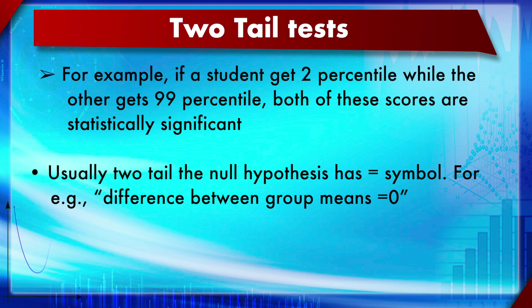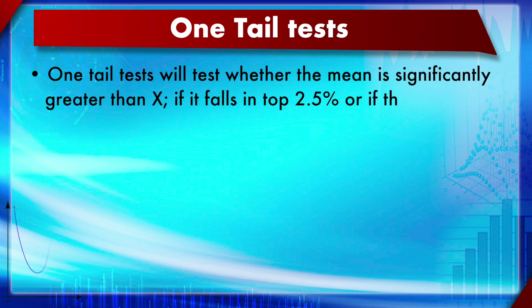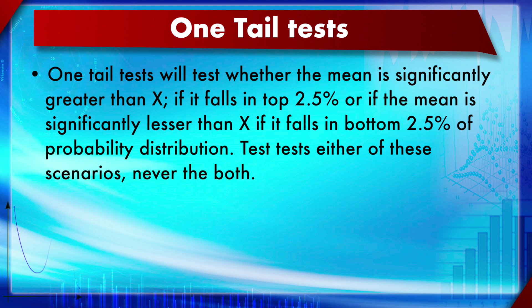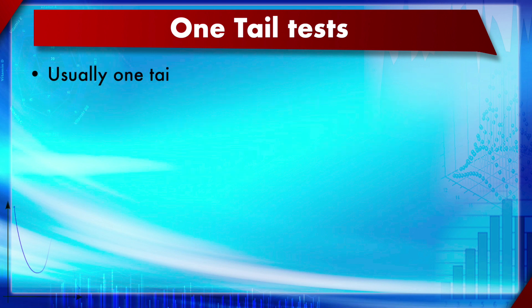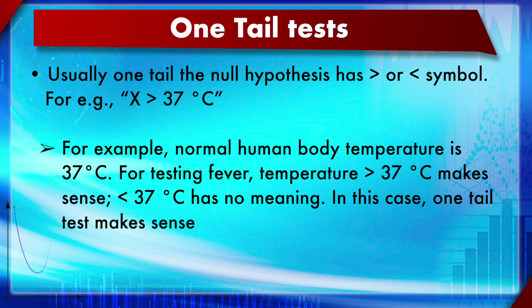The one-tail test tests whether the mean is significantly greater than or less than a specified value x — but only in one direction, never both. It looks at whether the value falls in the leftmost or rightmost 2.5% of the probability distribution. The one-tail null hypothesis uses a greater-than or less-than symbol. For example, temperature greater than 37 degrees Celsius is used to test for fever, since anything below 37 is considered healthy — that is a one-tail test.